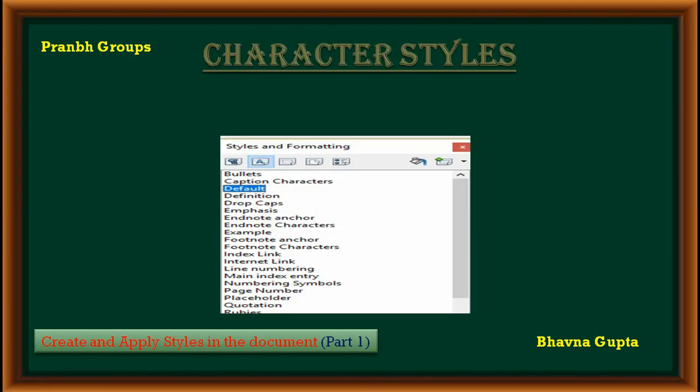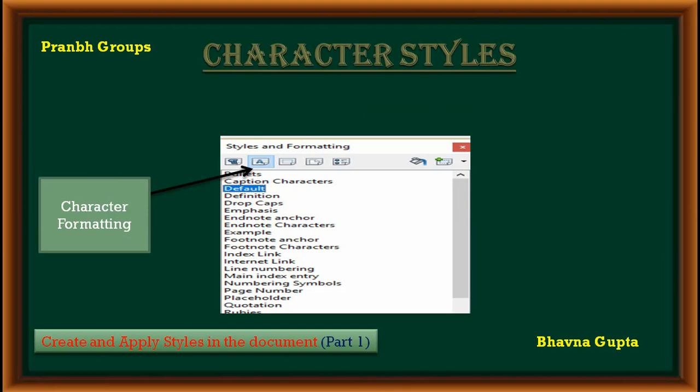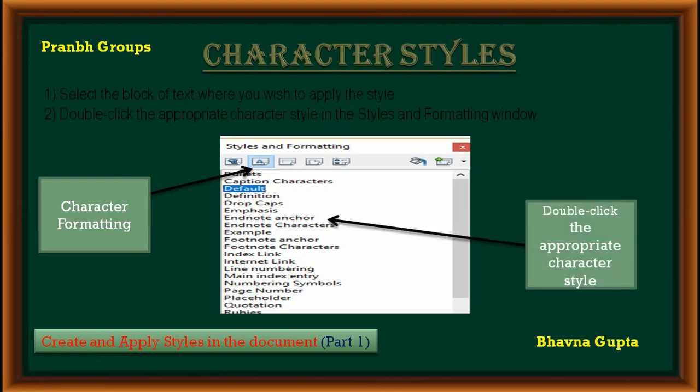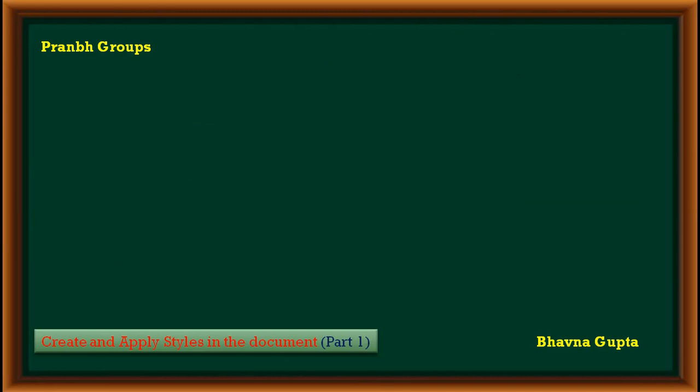The second style is character style. Open the Style and Formatting window and click the second button in the top bar. The list of available styles is displayed. To apply a character style, follow these steps: first, select the block of text, then double-click the character style.